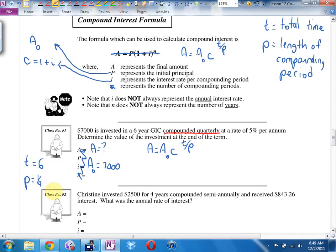Compounded quarterly at a rate of 5% per annum. Determine the value of the investment at the end of the term. Can you underline the words compounded quarterly? And can you write our template: A equals A0 C to the T over P. What are they asking you to find in this question? Final amount. A equals question mark. What's my initial amount? $7,000. What's T? Six years. What did I underline? That tells you the length of one period. P is a quarter of a year. What if they had said compounded monthly? What would P be? 1/12. What if it was compounded semi-annually? P would be a half. It can be yearly. P would be one. Weekly, P would be 1 over 52. Daily, P would be 1 over 365.